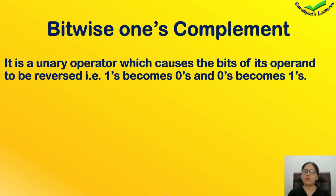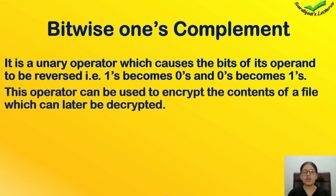A unary operator means an operator that only one operand is used. The one's complement operator can be used to encrypt the content of a file, which can later be decrypted.